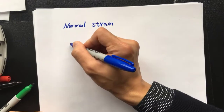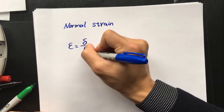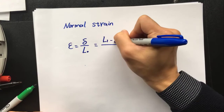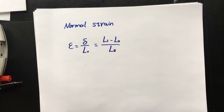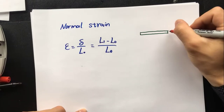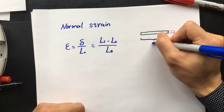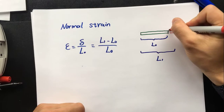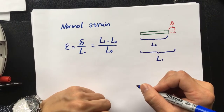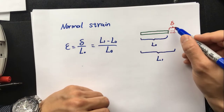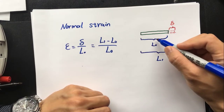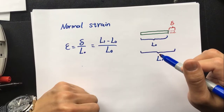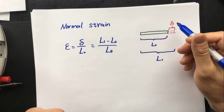Normal strain is defined as epsilon equals delta — the change of length — over the original length L0. The change of length equals the length after deformation minus the original length, divided by the original length. In a diagram, the original length of the beam is L0, the new length is L1, and the change of length is delta. The definition is straightforward: find the change of length, find the original length, take the ratio, and you have the normal strain. Normal strain has no unit.